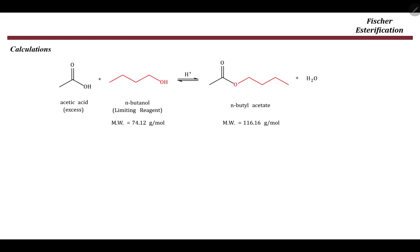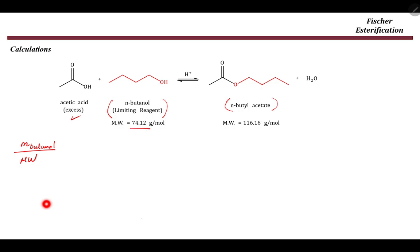For the calculations, acetic acid is used in excess, so n-butanol is the limiting reagent and is used to calculate the theoretical amount of n-butyl acetate. If you have the mass of butanol and divide by its molar mass of 74.12 g/mol, you get the number of moles of butanol, which equals the number of moles of ester since this is a 1:1 ratio reaction.